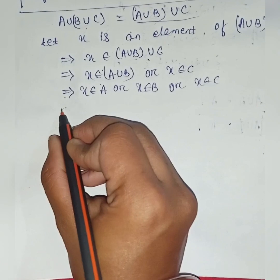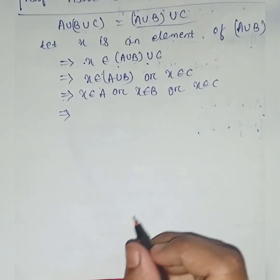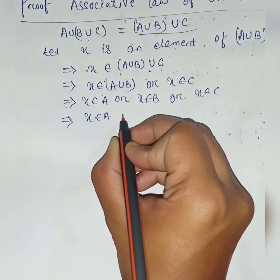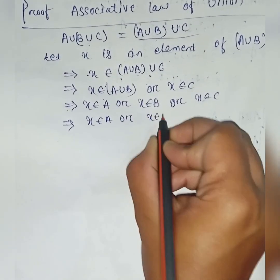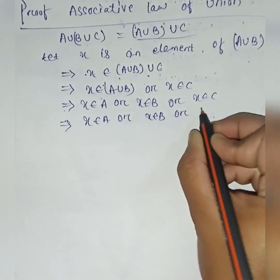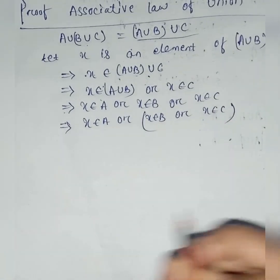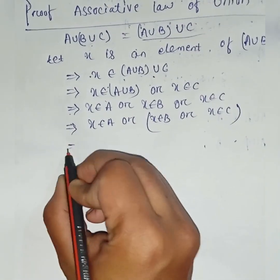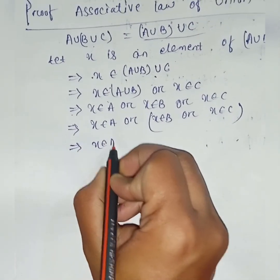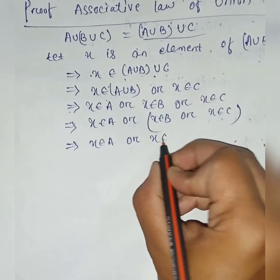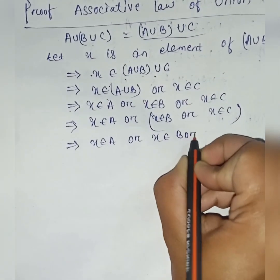Now we can take brackets and rearrange. We have x belongs to A, and x belongs to B or C repeated. So we can write x belongs to A or the bracket x belongs to B and C.